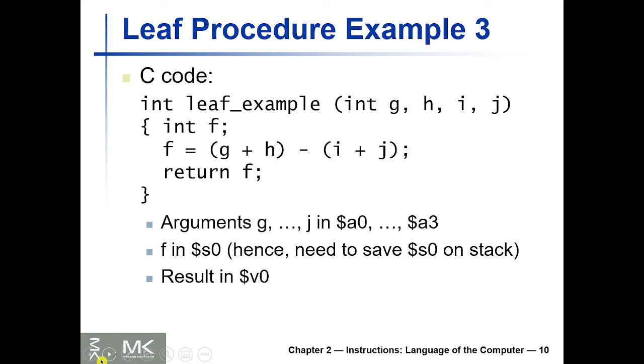In this lecture we're going to explore another example for leaf procedure, but this time we're going to use a stack. Here is another simple function - this time we have four arguments, and we define here some local variable. This C code, this function is called leaf_example, and we're going to save f in S0 and the return result is in v0.